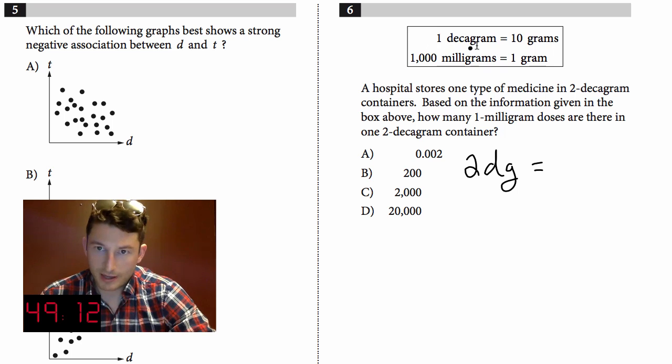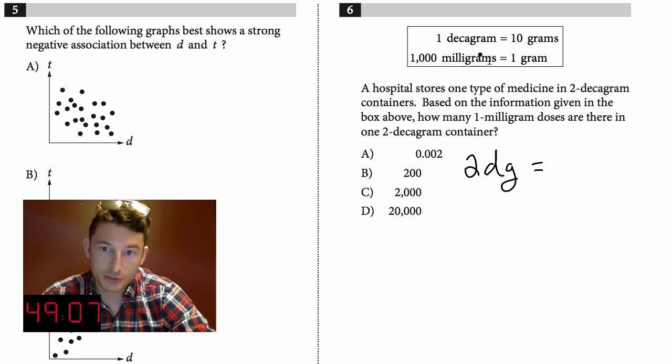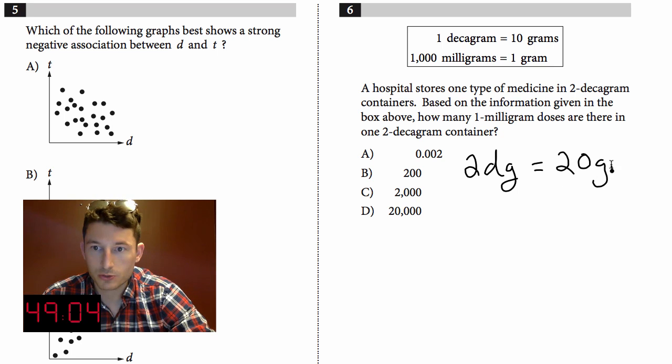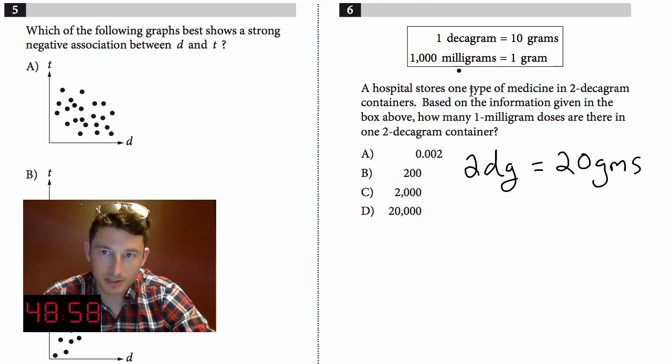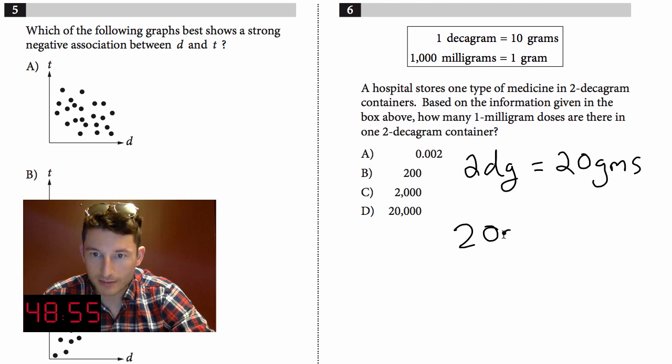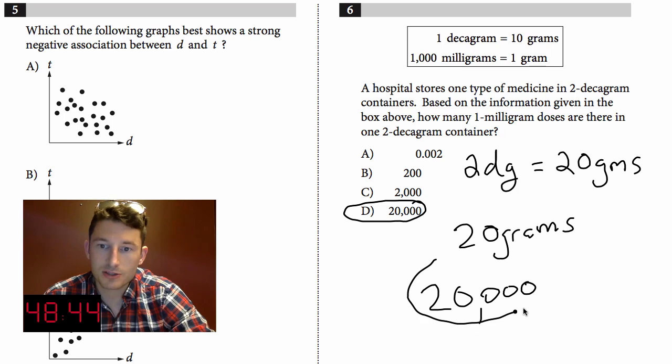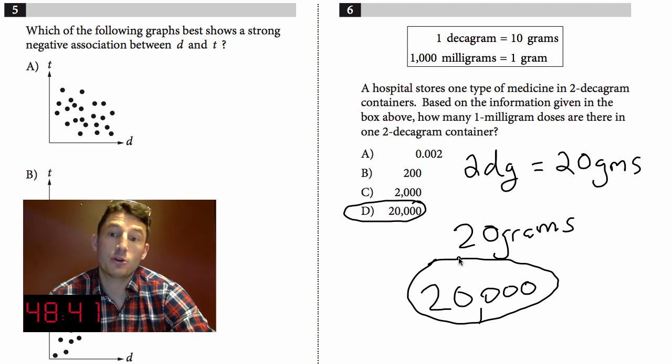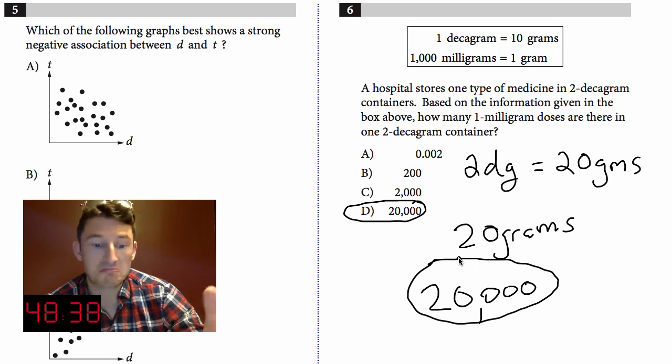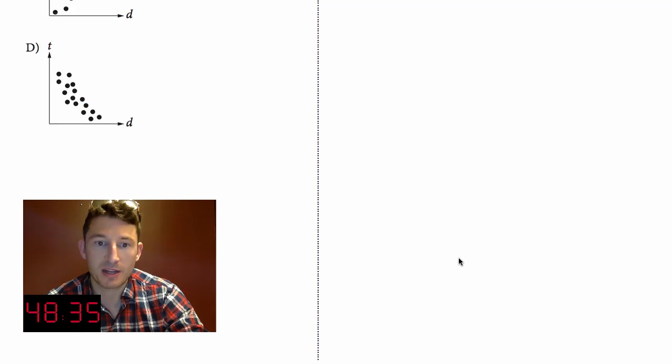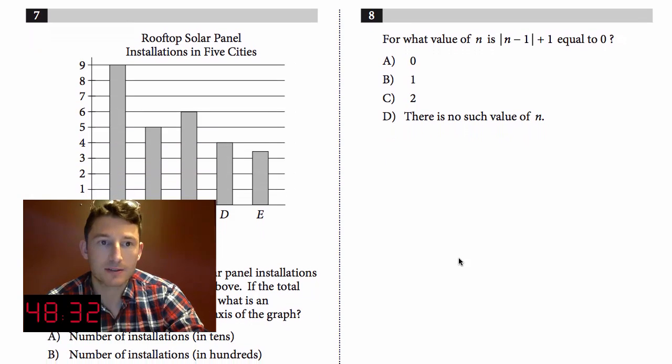We know one decagram is 10 grams, so two decagrams is 20 grams. One gram is a thousand milligrams, but we have 20 grams here, so we're just multiplying by 20. 20 times a thousand is twenty thousand. Notice I didn't do the whole 'this over this equals this over that' because it's going to waste time. You don't have to do that. If you need to you can use ratios but I don't think you really need to for a question like this. You want to speed ahead and save time for the back end of the test.